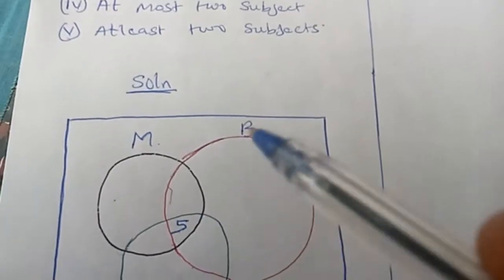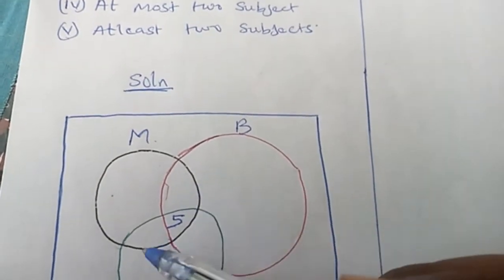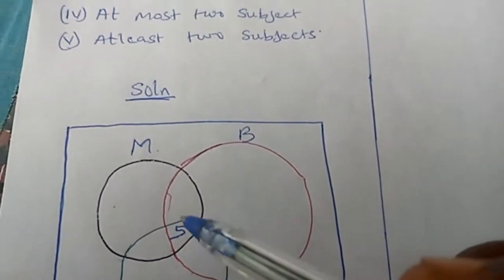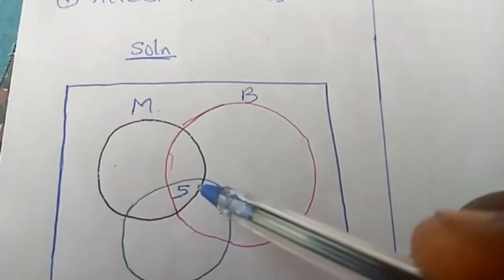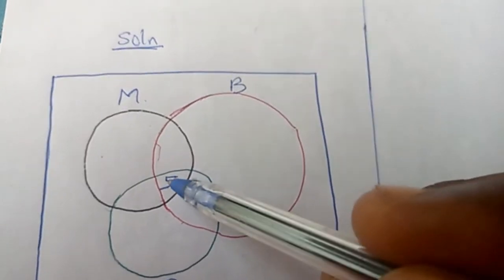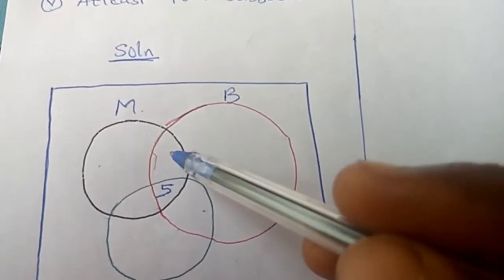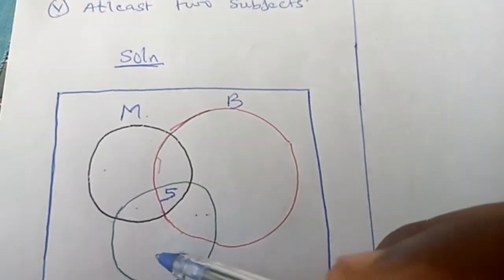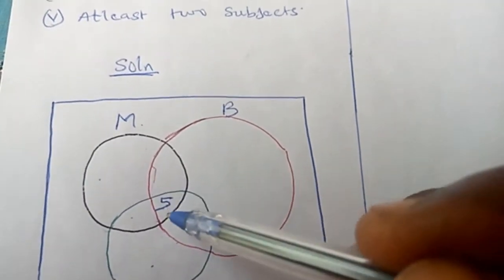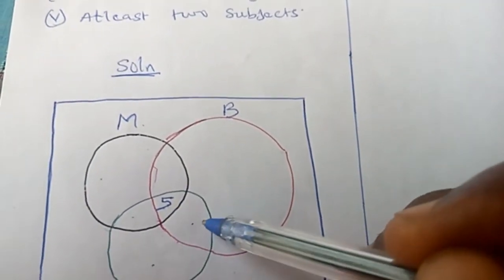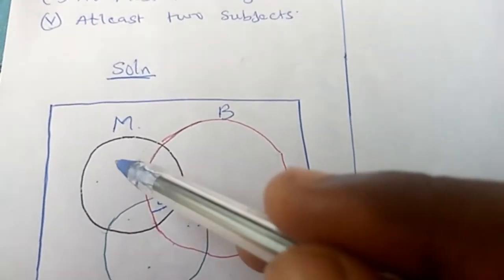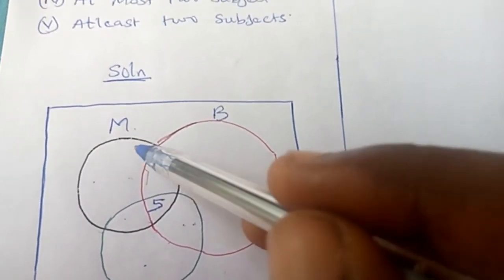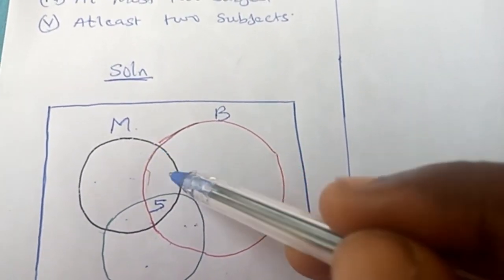After putting in the center value, you go to the two-set intersections — those are what you insert second. In a three-set Venn diagram, you insert the center first, then these two-set intersections. To get those values, you go to where they say mathematics and biology. The black circle is mathematics and the red circle is biology.